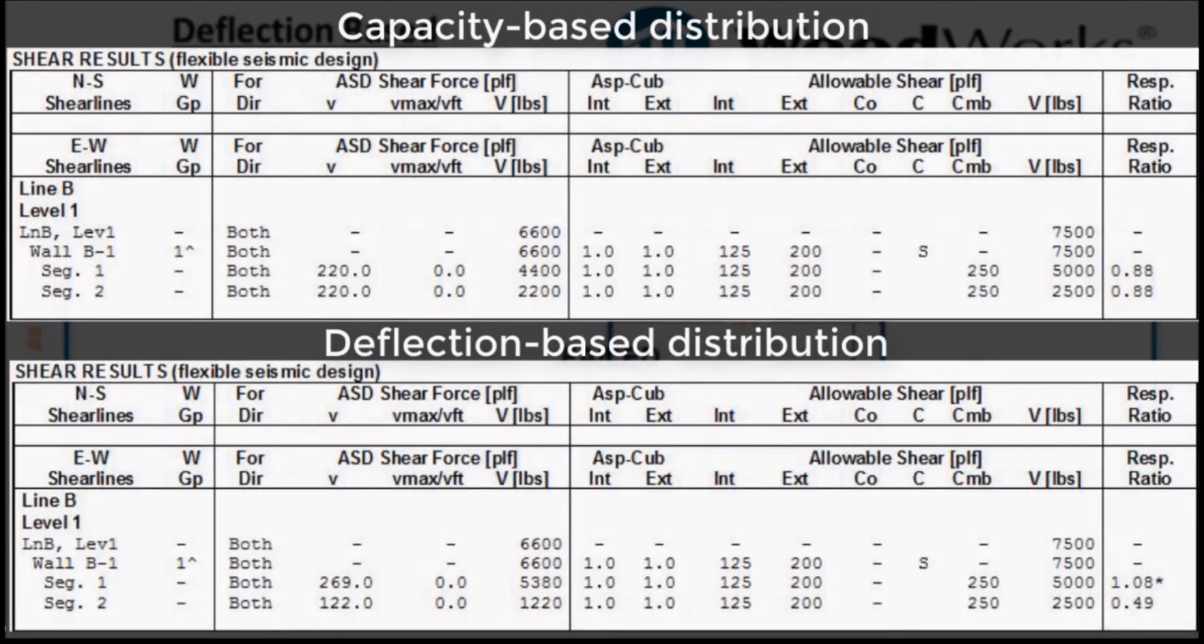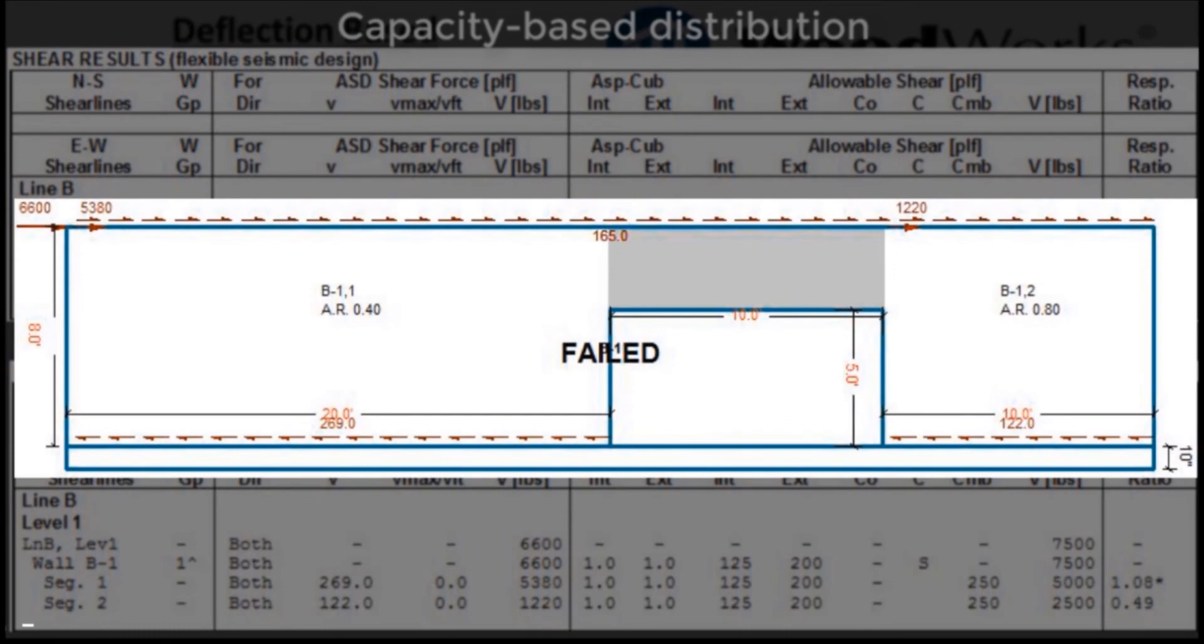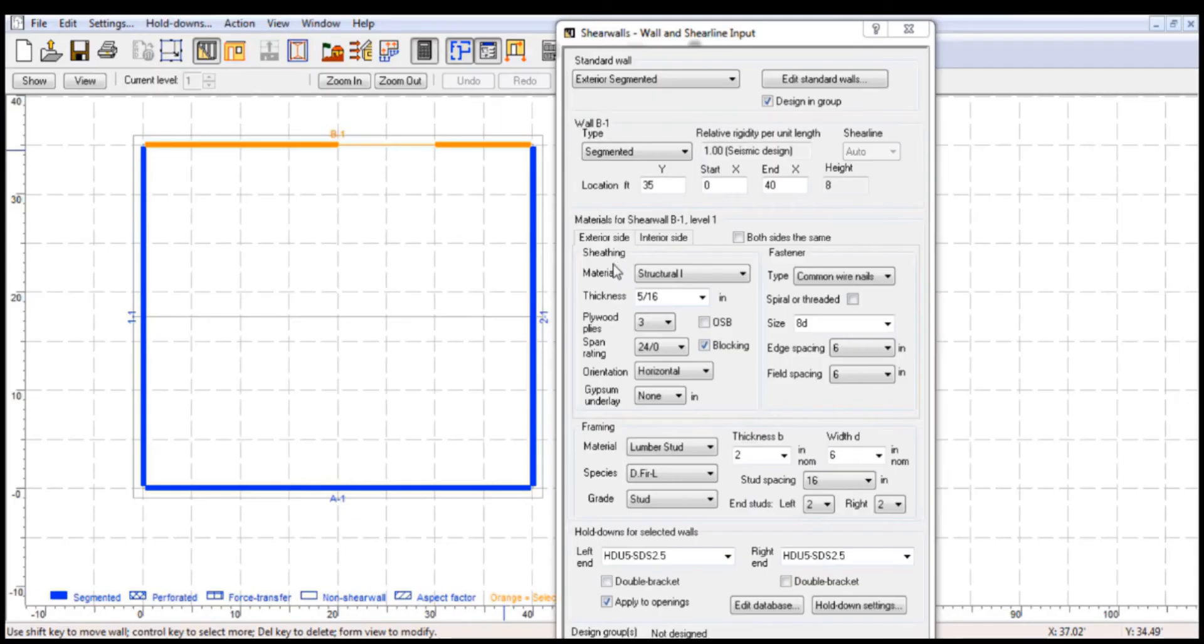As the engineer, you sometimes need to use your judgment about the analysis. In this particular example, the applied 6,600 pounds factored design force passed when capacity-based distribution is used. However, you may have noticed the elevation view on the previous slide for deflection-based distribution showed fails. In this example, the software determined that the first segment's design capacity was less than the calculated force by 8%.